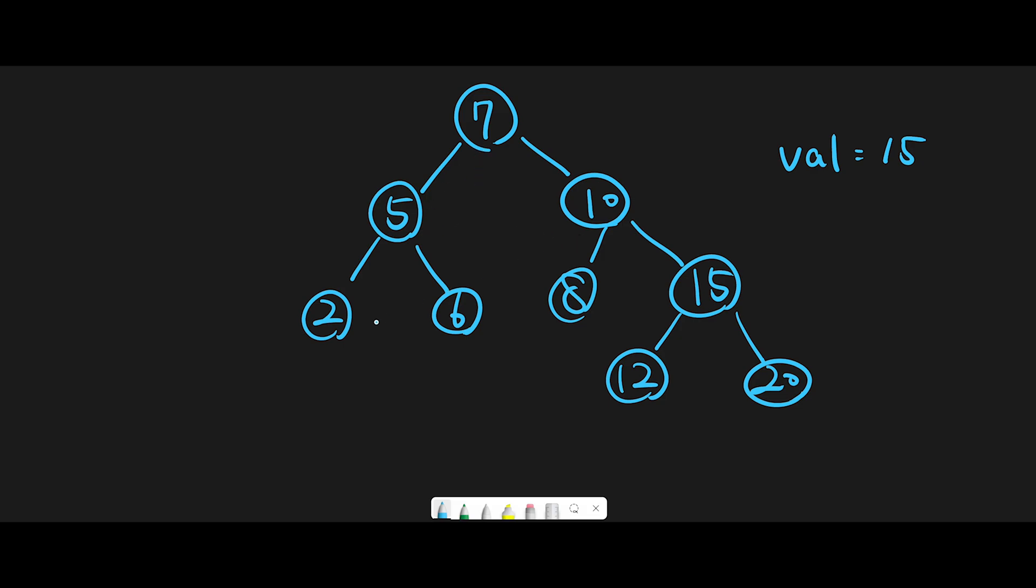Let me explain with this example: we have a tree with values 7, 5, 10, 2, 6, 8, 15, 12, 20, and the val equal to 15.